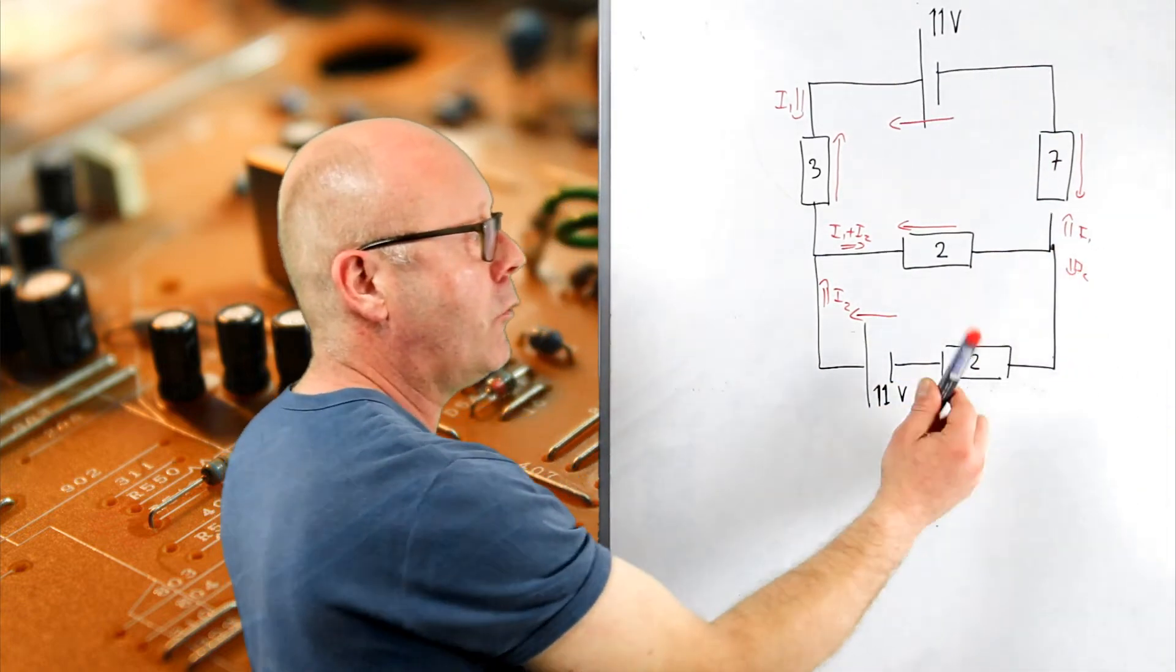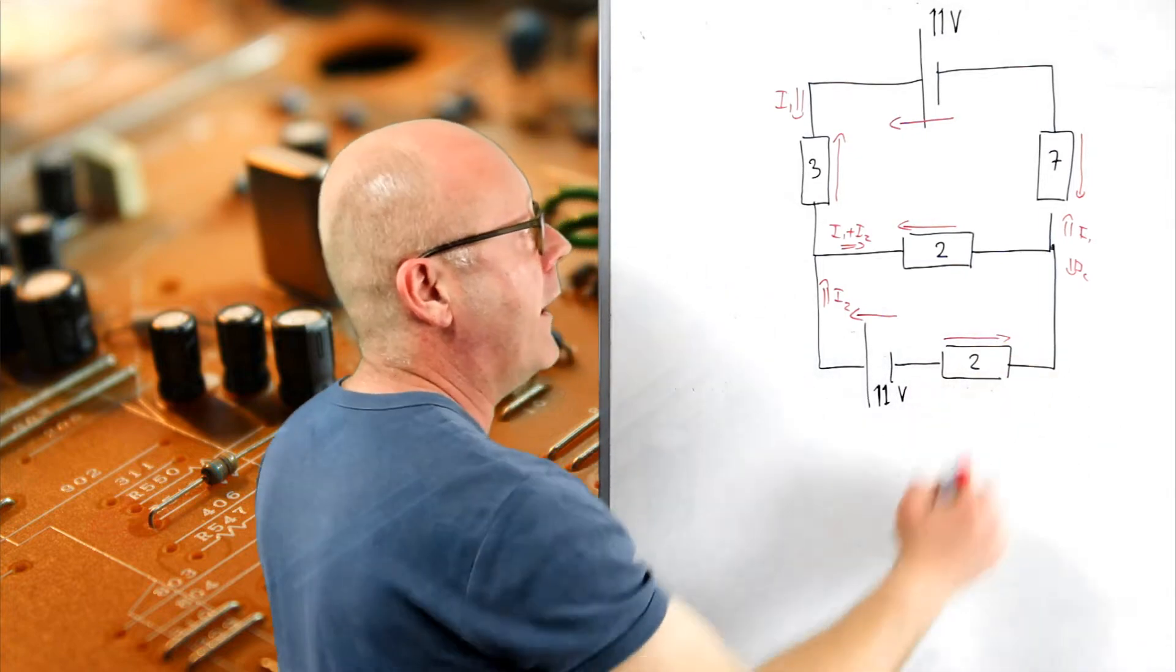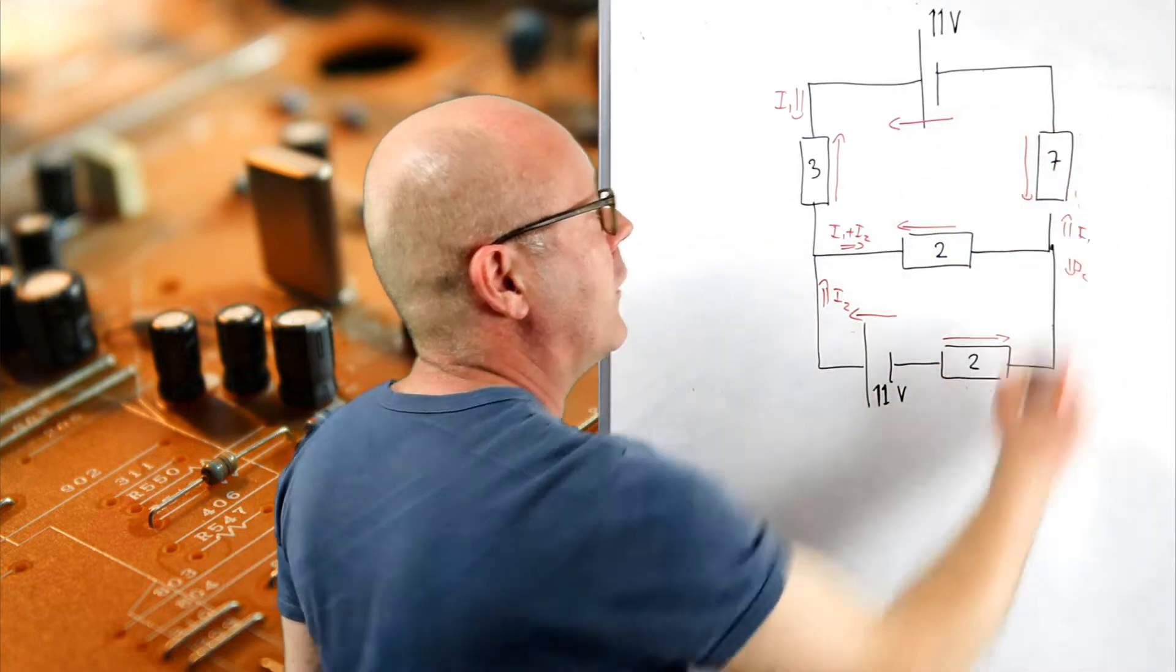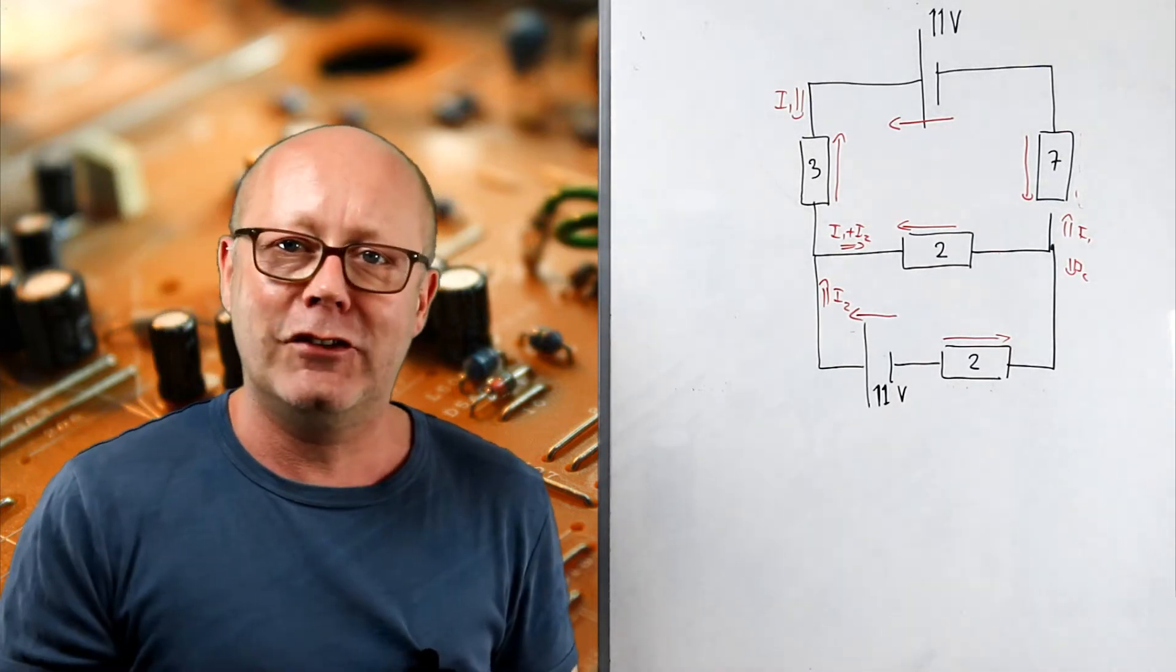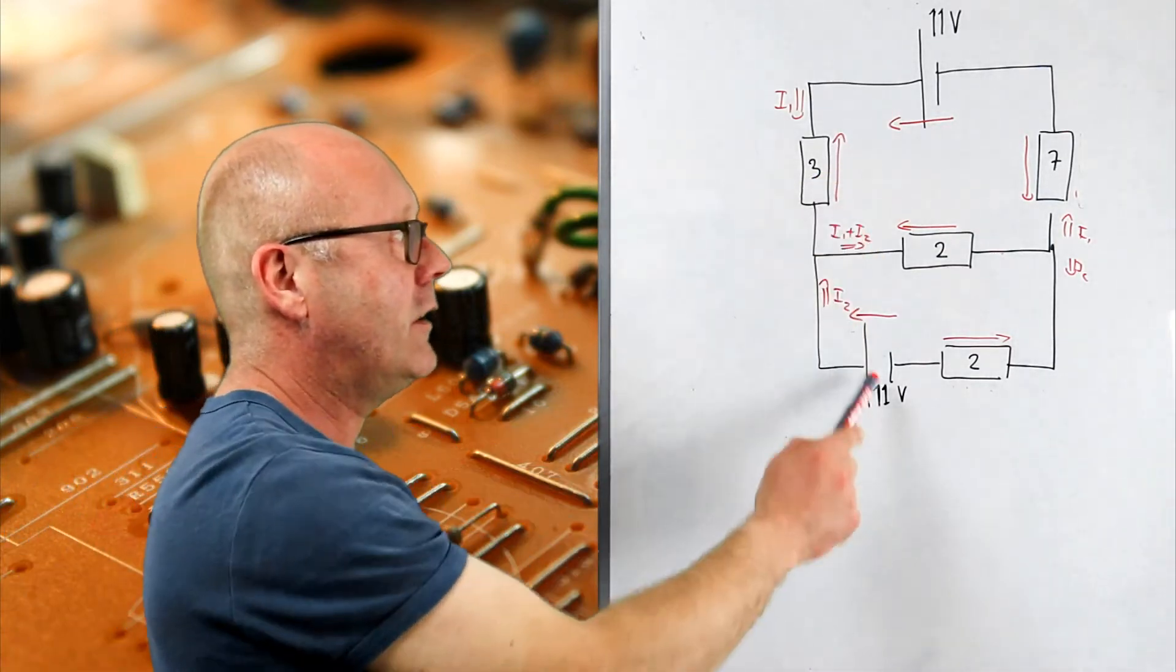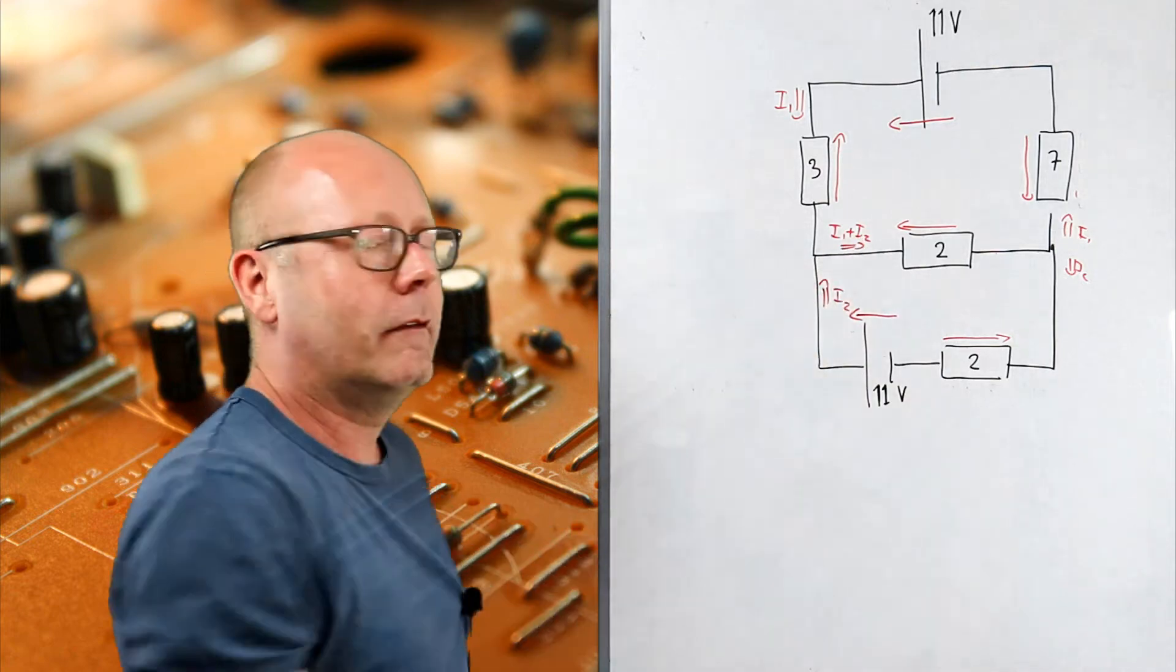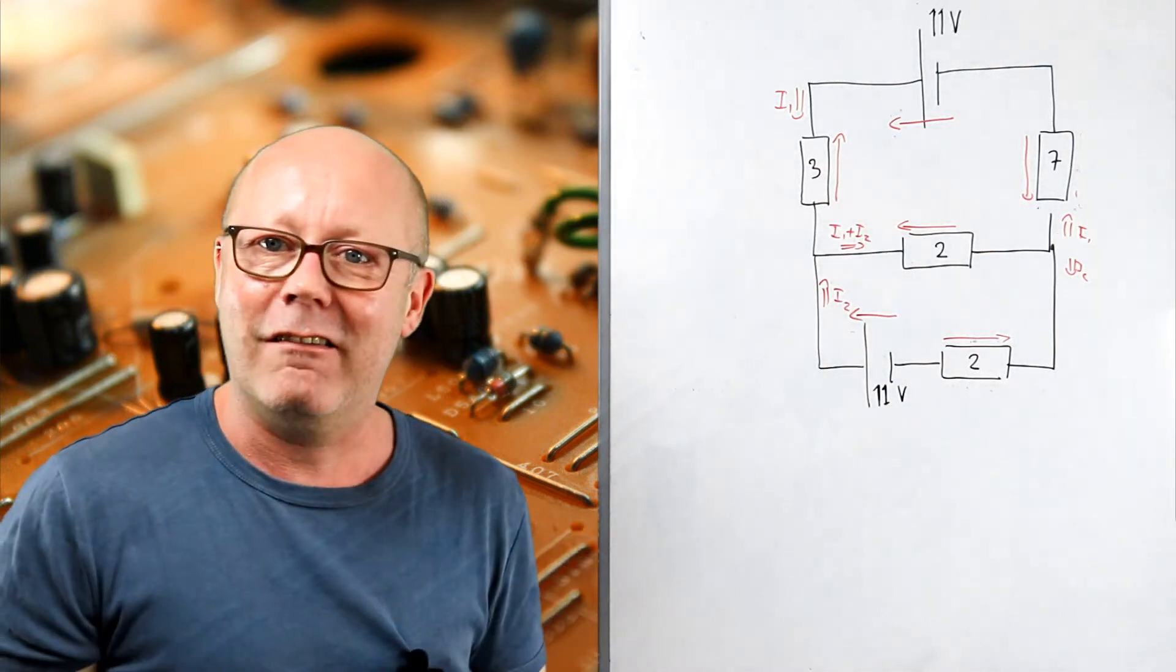therefore you will have a potential drop here. Same for I2, going through the 2 ohms resistor with a potential drop there. It's better to draw it on the same side of the circuit, here. All right, so now I have an understanding of my circuit. I see that the two batteries are creating currents which join here. Good, now we need to calculate these currents.